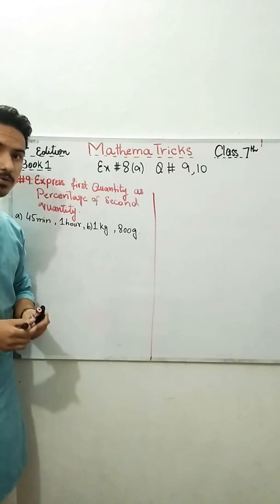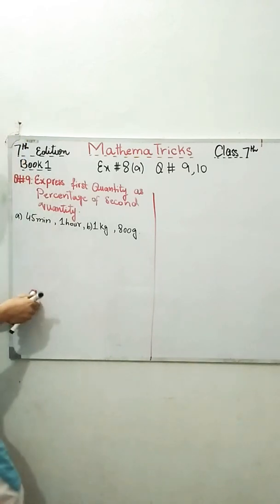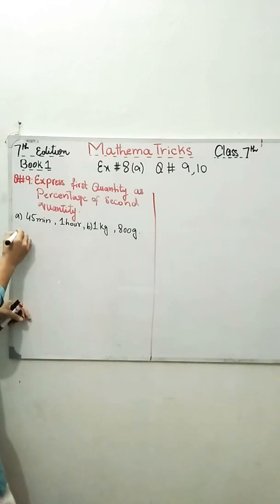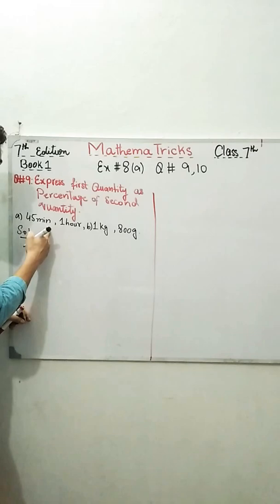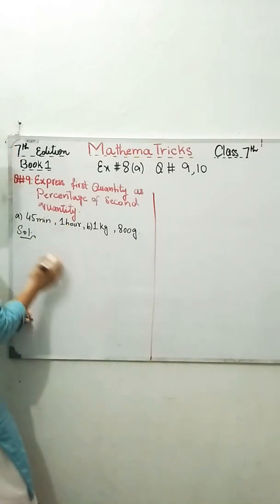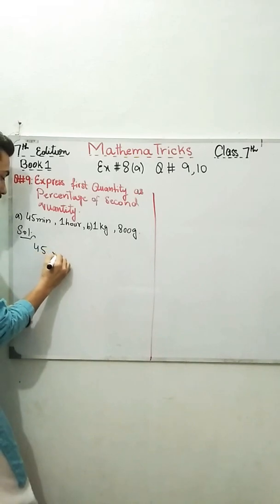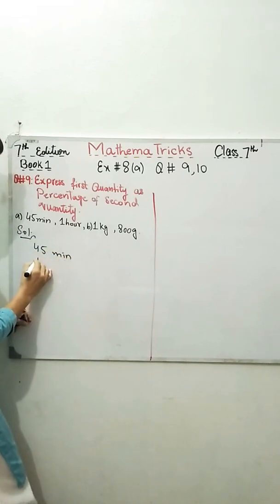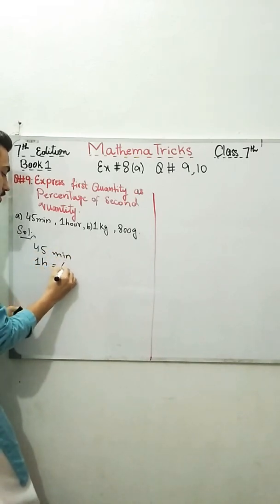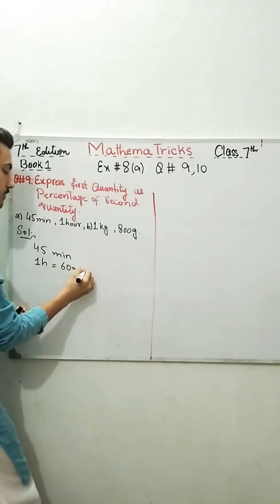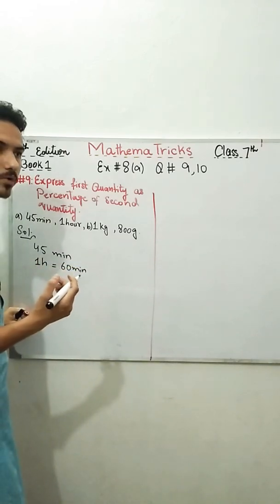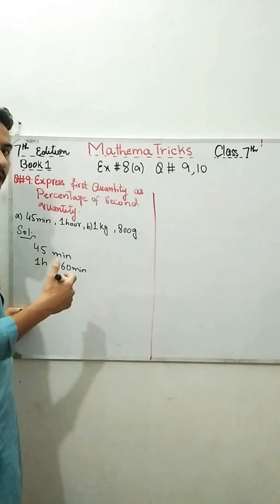First of all, we need to convert in the same unit. I am going to solve part a. It said you need to convert 45 minutes as percentage of 1 hour. So first of all, 45 minutes and 1 hour is equal to 60 minutes.